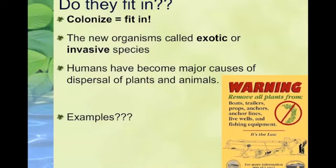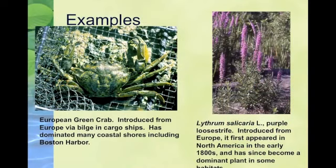This new organism is called an exotic or an invasive species. An invasive species generally has a negative connotation to it, and humans have become major causes of these invasive species moving between continents. One example is the European green crab, which was introduced from Europe via the bilge.